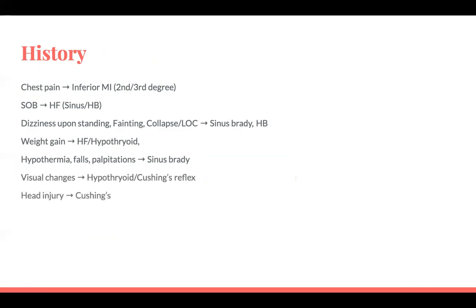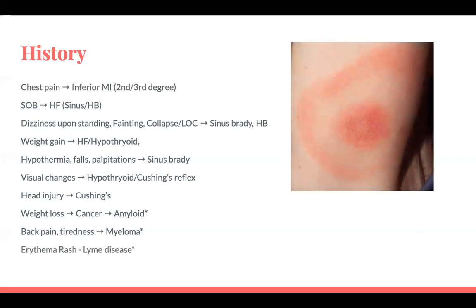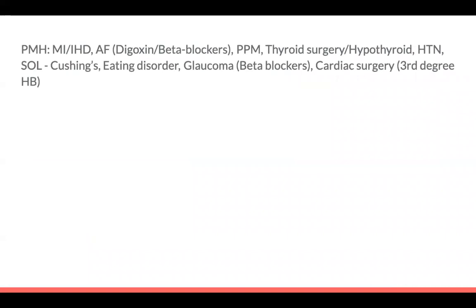Ask about head injury, screen for symptoms of weight loss and cancer, but also tiredness — myeloma and amyloid can cause heart block. Lyme disease and Chagas disease can also cause heart block. Ask about exercise: the more athletic someone is, the more likely they are to be bradycardic. In those patients, a normal pulse rate might actually be more worrying as a sign of relative tachycardia, whereas bradycardia may simply be normal for them.